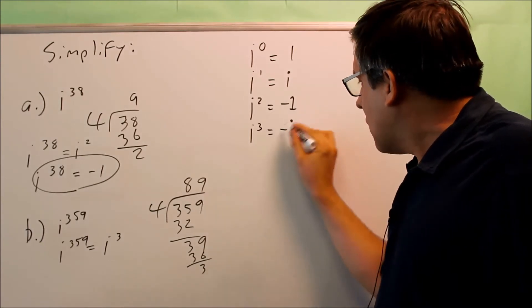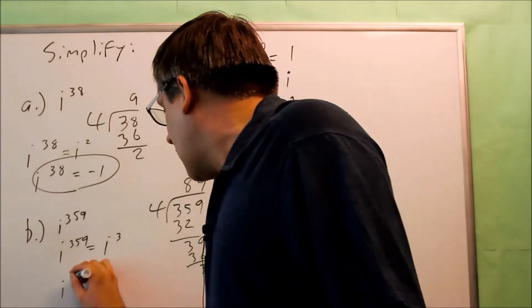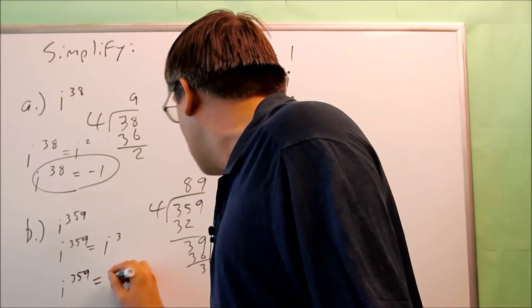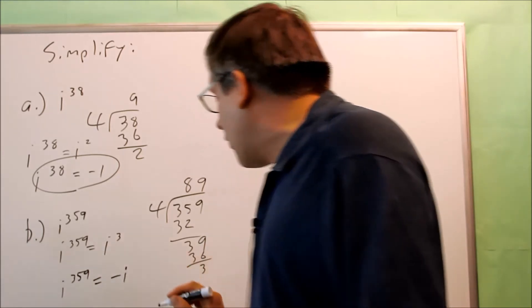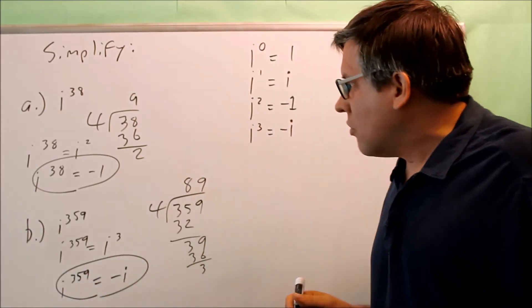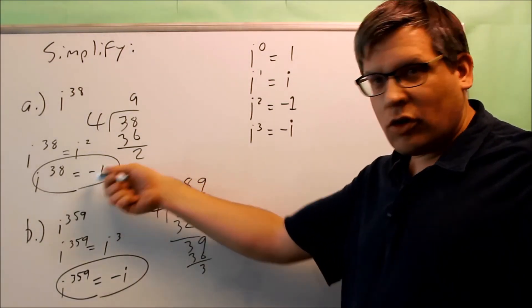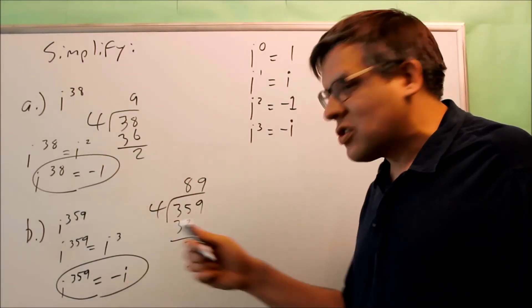So that means that i to the 359 is the same thing as i to the 3rd power. And i to the 3rd power is the same as negative i. So we can say that i to the 359 is the same thing as negative i. And then that would be how we can simplify that. So the first one simplifies to negative 1, second one simplifies to just negative i.